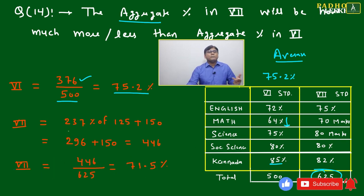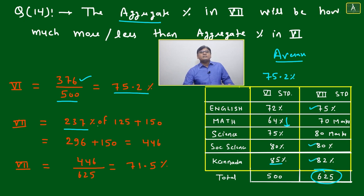First we'll add the percentages: 237 percent total from 75, 80, and 82. We calculate 237 percent of 125, then add the marks directly: 80 plus 70 equals 150. So 296 - that's 237 percent of 125, or 125 percent of 237.